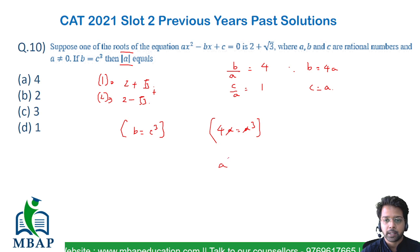Cancelling a on both sides, we get a² = 4, so a = ±2. The value of a is either plus 2 or minus 2, so the mod of a will always equal 2. Hence, the answer is option B.